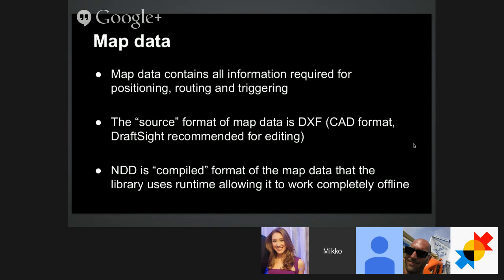As the source of that map data, there's a CAD file format called DXF which is used. You can edit it using a freely available tool called DraftSight. That's the source format — in it you have marked all the routes, all the beacons, their positioning, and the trigger zones. The NDD is a compiled format of that CAD file with a lot of pre-calculated data in it. The library then internally uses that NDD to provide you with triggers and other positioning information.